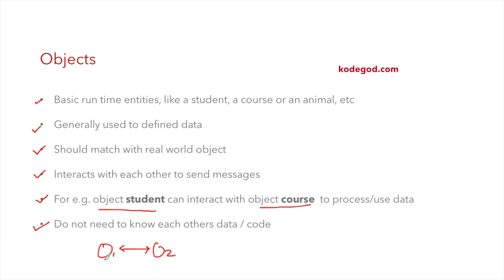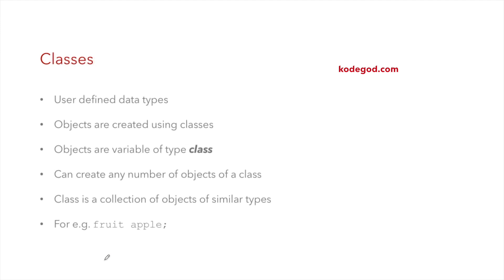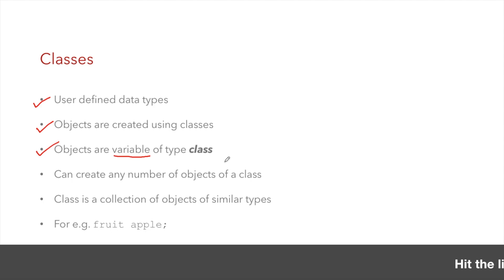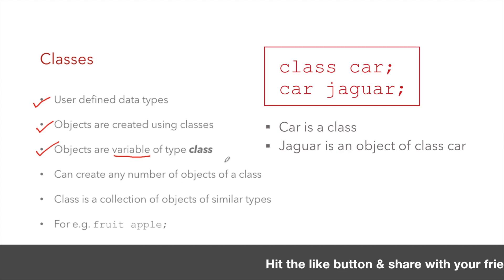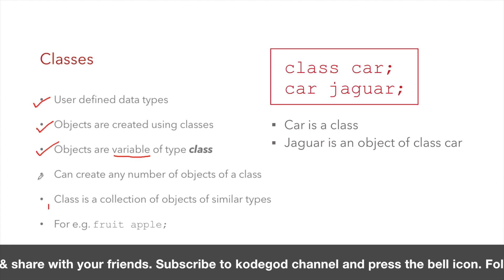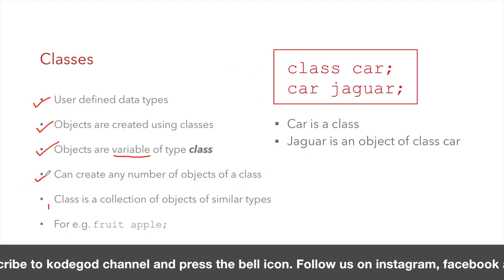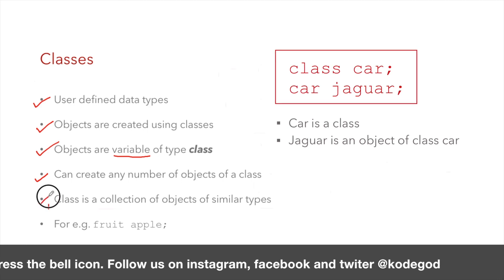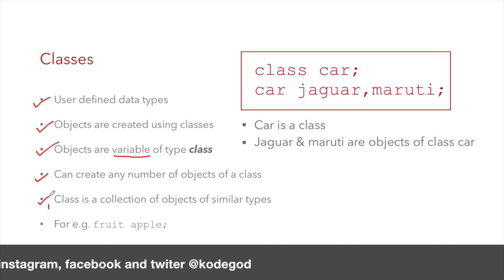Objects are created using classes, which is the next important feature of OOP. Classes are user-defined data types and objects are created using classes — in a way, objects are variables of type class. Just like we write 'int x' where x is a variable of type integer, when we have a class called Car then Jaguar becomes an object of type class Car. When we create a class we can create any number of objects of that class.